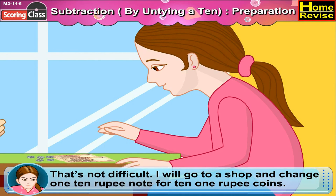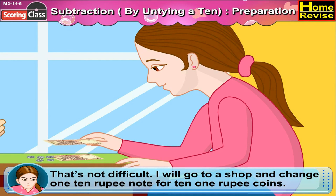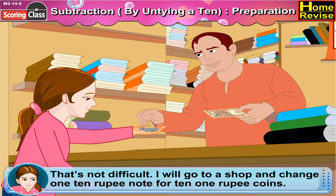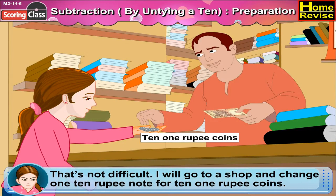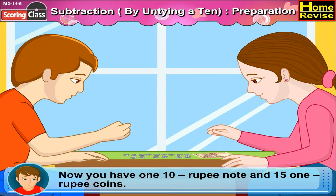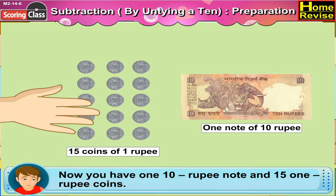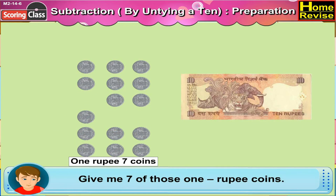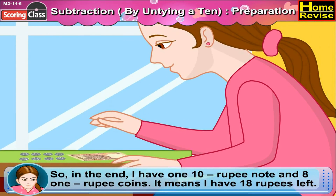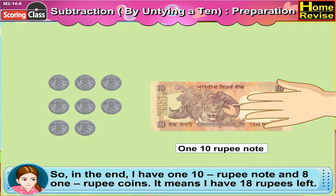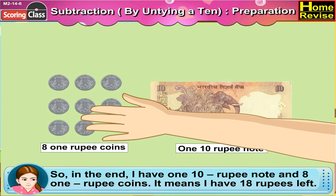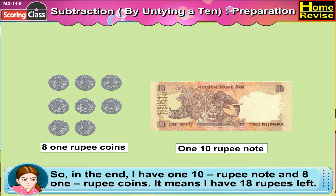Sonu says, that's not difficult. I will go to a shop and change one ten rupee note for ten one rupee coins. Nandu replies, now you have one ten rupee note and fifteen one rupee coins — give me seven of these one rupee coins. Sonu says, so in the end I have one ten rupee note and eight one rupee coins. It means I have eighteen rupees left.